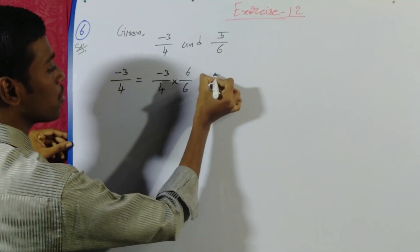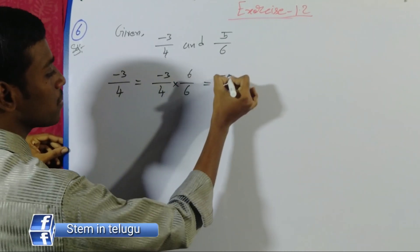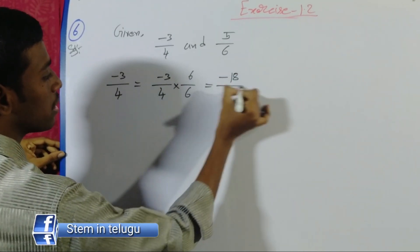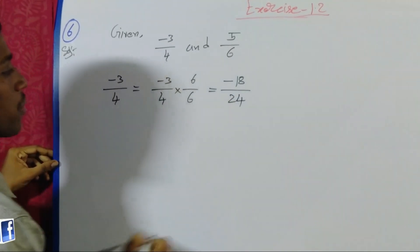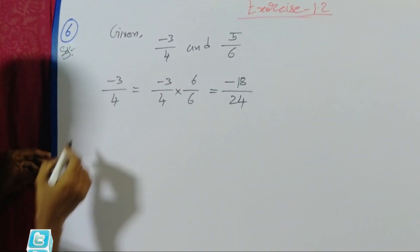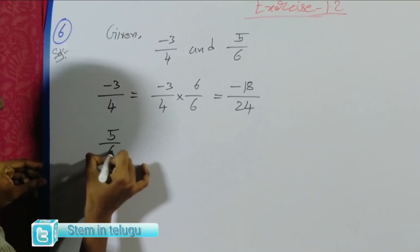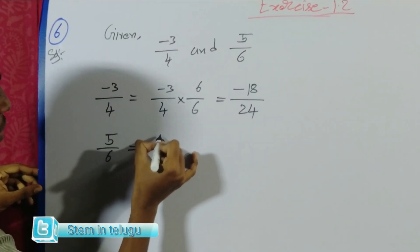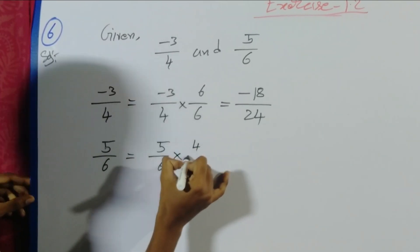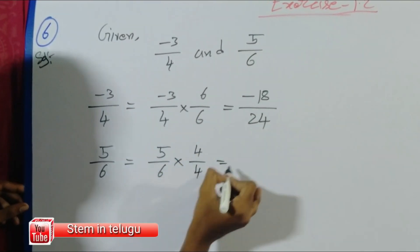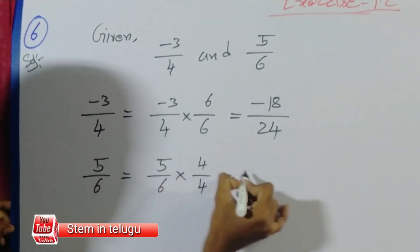Minus 3 by 4, we multiply by 6 by 6: minus 3 into 6 is minus 18, and 4 into 6 is 24. Next, 5 by 6, we multiply by 4 by 4: 5 into 4 is 20, and 6 into 4 is 24.